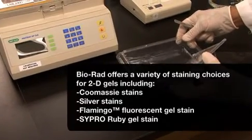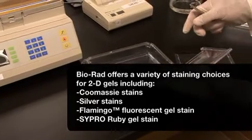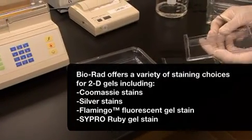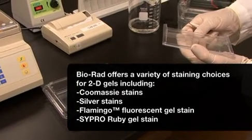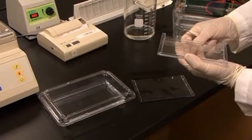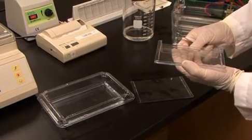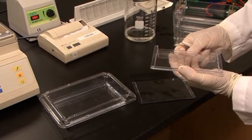Bio-Rad offers many different staining choices for 2D gels, ranging from the visual stains, the traditional Coomassie and silver stains, to the fluorescent stains, Flamingo and Sypro. In this case, I am staining this gel with Bio-Safe Coomassie. The first step requires 3 ten-minute rinses in water to remove SDS from the gel.